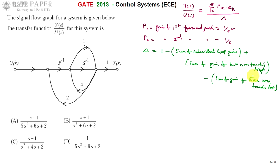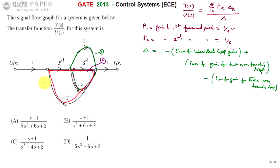First, find the number of individual loops. There are four individual loops: the first loop, second loop, third loop, and fourth loop, each identified from the signal flow graph.